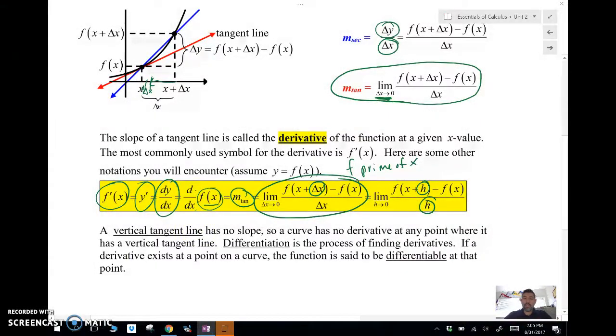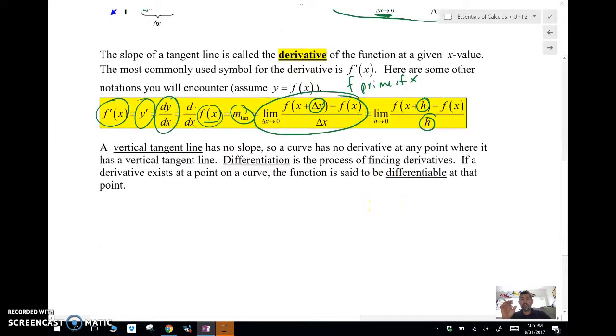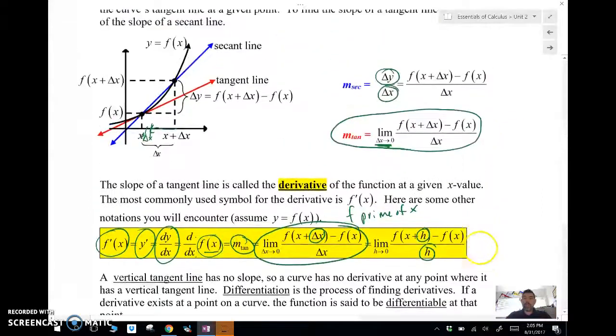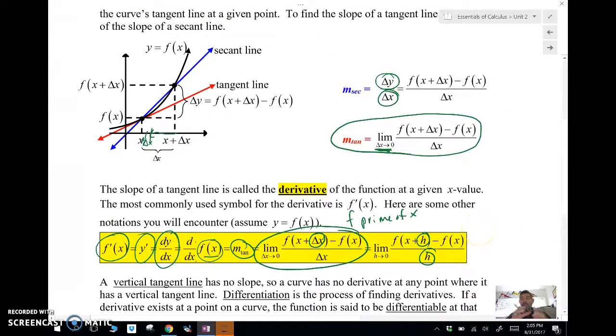So anytime there is a derivative at a point, we call it differentiable. So differentiation or differentiable is when we can take, so differentiation is a process of finding the derivative, and a differentiable means that we can find the derivative at a point. So that's my quick introduction of what a derivative is.